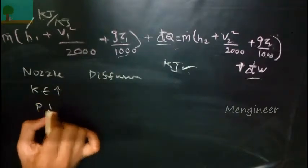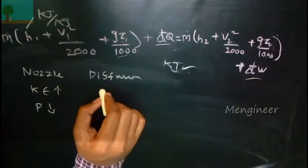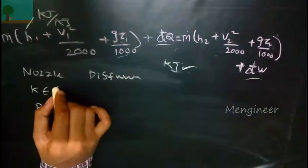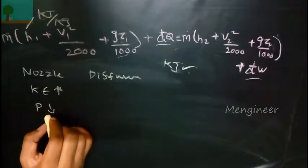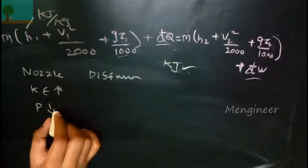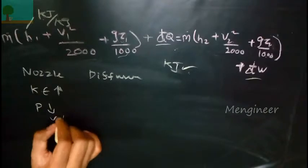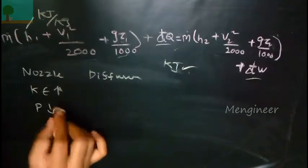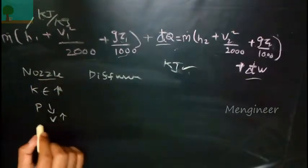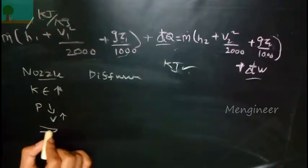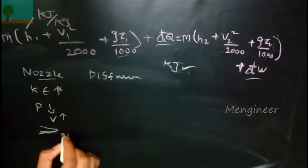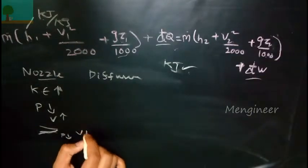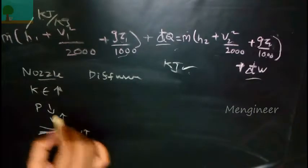We can apply this equation in nozzles. For nozzles, the kinetic energy will be maximum and the pressure will be minimum. If the kinetic energy is maximum, the velocity will be maximum. The nozzle is basically used to increase the velocity of the fluid. At the outlet, the pressure will be minimum, so the velocity at the outlet will be maximum.